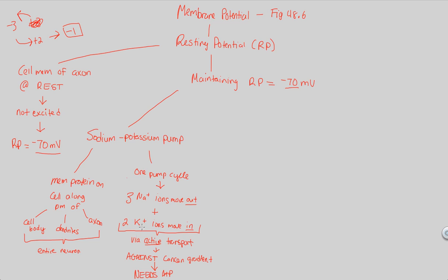Is that good or bad? You want to maintain a resting potential that is quite negative at negative 70 millivolts, so this process — going against the concentration gradient and becoming more negative with every single pump — is a good idea. However, this process requires ATP, and energy is valuable. So the sodium-potassium pump is certainly involved in maintaining the negative 70mV resting potential, but there will be something that helps even more.